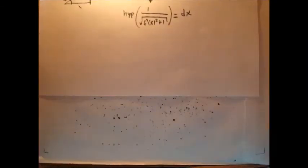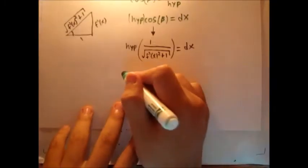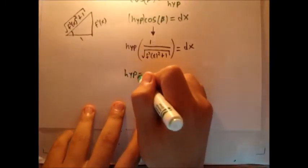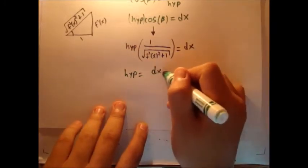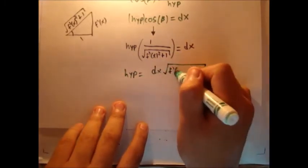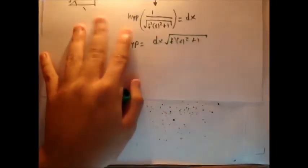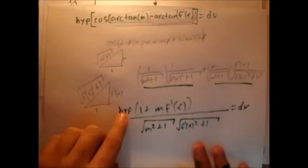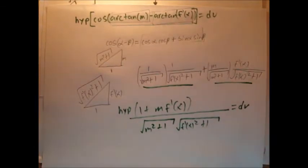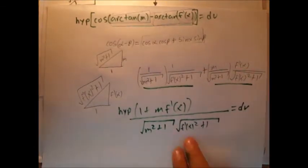So here it looks more obvious for me to do the following. I want to isolate hypotenuse. Hypotenuse equals dx times square root f prime of x squared plus 1. We know what the hypotenuse is. We can actually go in and plug it into this hypotenuse.